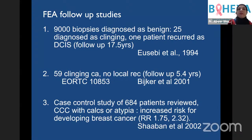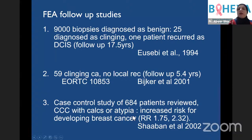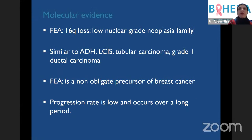What do we know about flat epithelial atypia? Follow-up studies show it can progress, but at a very slow rate and in a small proportion of patients, into low-grade DCIS. A case-control study looking at FEA and columnar cell change found an increased risk for developing breast cancer. Molecular evidence shows that FEA, ADH, lobular neoplasia, and tubular carcinomas share a common pathway — the low nuclear grade neoplasia family — characterized by 16q loss. Progression is slow and occurs over a long period of time.